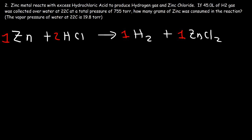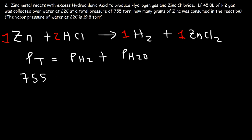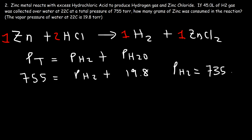The first thing we need to do is calculate the partial pressure of H2. The substances above the water are hydrogen gas and water vapor. The total pressure is 755 Torr, and the partial pressure of water at 22°C is 19.8 Torr. So 755 minus 19.8 gives a partial pressure for H2 of 735.2 Torr.